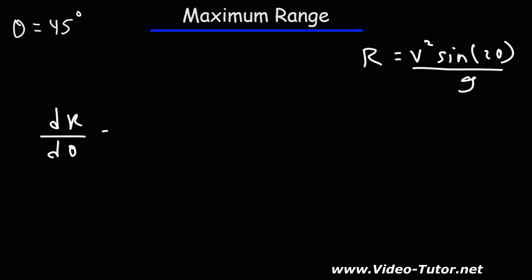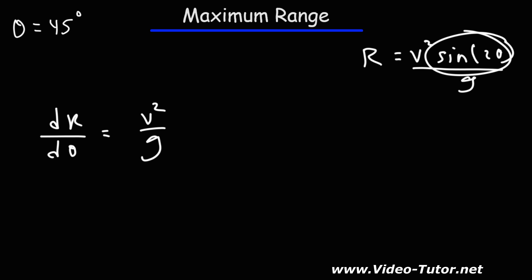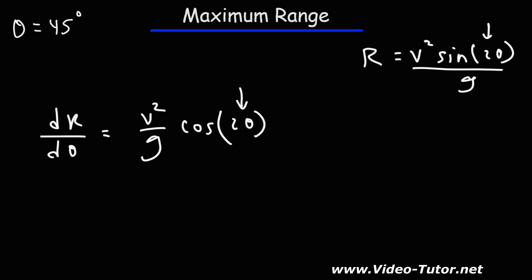Because we're differentiating with respect to theta, the velocity and the gravitational acceleration will be held as constants, so we can rewrite them as constants. We're taking the derivative of sine 2 theta. The derivative of sine is cosine. Using the chain rule, we keep the inside angle the same and then differentiate the inside angle — the derivative of 2 theta is simply 2.